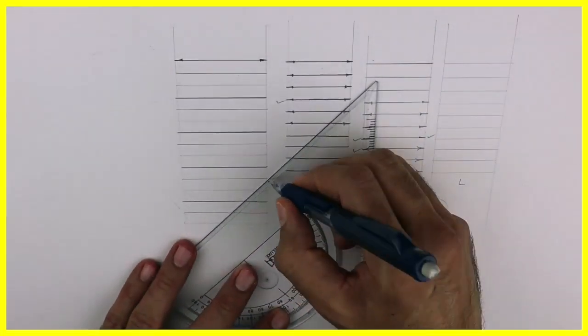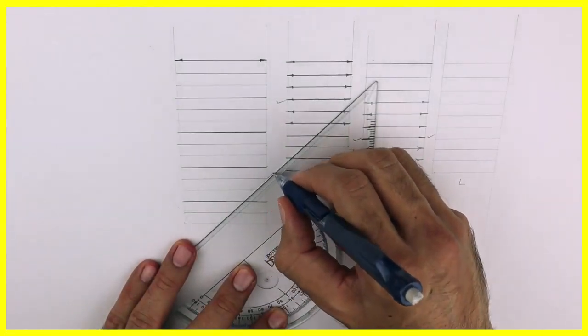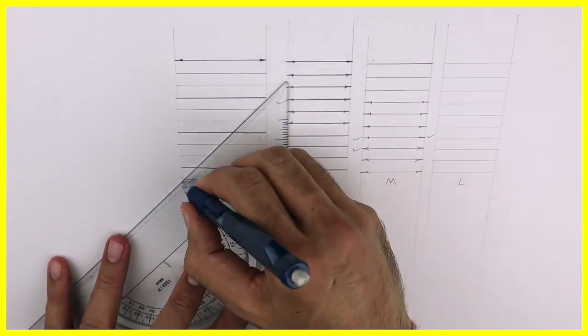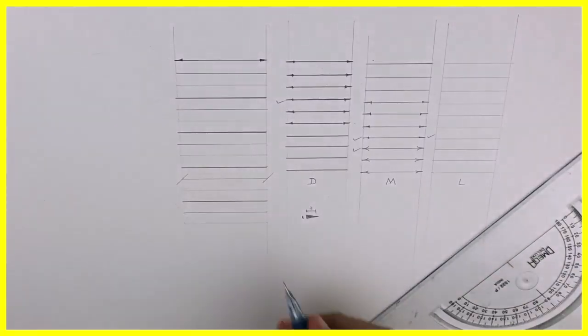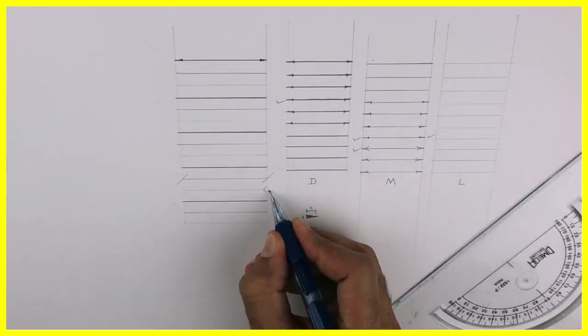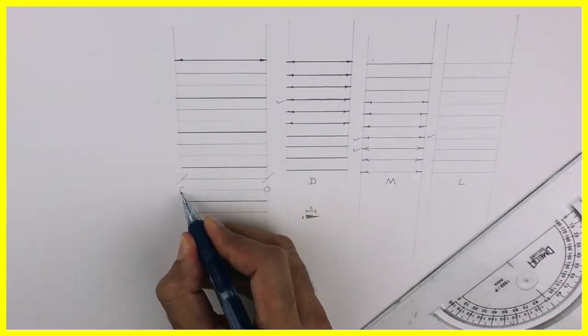Now we will see oblique stroke. This is inclined at 45 degrees. So this kind of an arrow is also possible. Or we can draw a circle of diameter 3 mm. This way also we can show dimensioning.